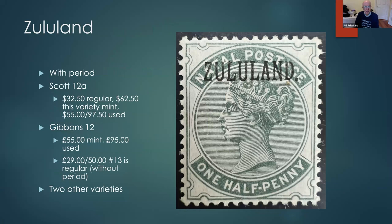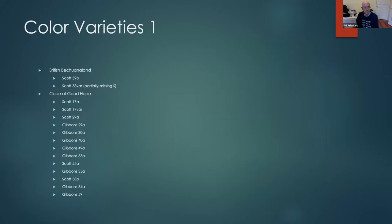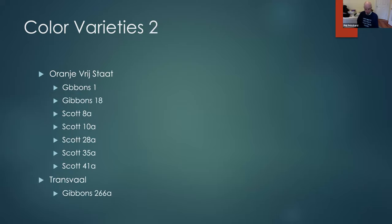The last stamp is a Zululand stamp. Gibbons lists the variety with the period and without the period as two separate numbers. Scott has the one without the period as number 12 and the one with the period as 12a — so it's debatable whether one of these is a variety or not. Again, used stamps are more valuable than mint, and there are two other varieties including an inverted overprint, which I don't have. These are just a list of the color varieties provided for in my pages — since the pages weren't completely done, this is probably only a selection of the color varieties that exist.